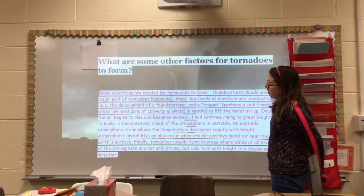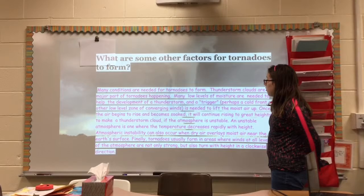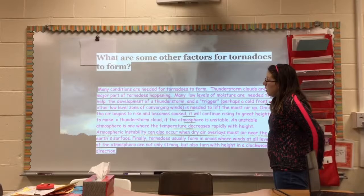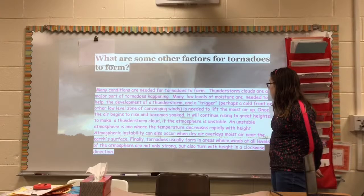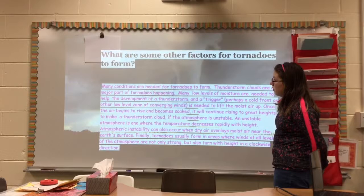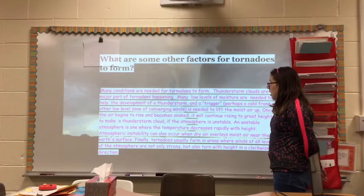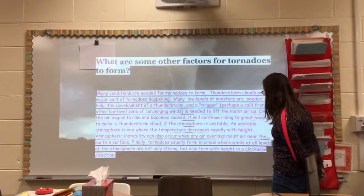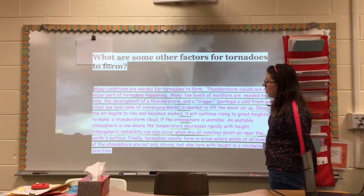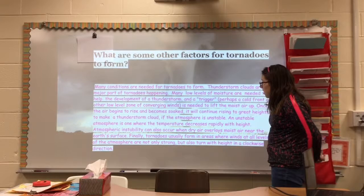Many conditions are needed for tornadoes to form thunderstorms. Storm clouds are a major part of tornadoes happening. Many low levels of moisture are needed to help in the formation of a tornado, and a trigger — perhaps a cold front or other low-level zone of converging wind — is needed to lift the moist air up.